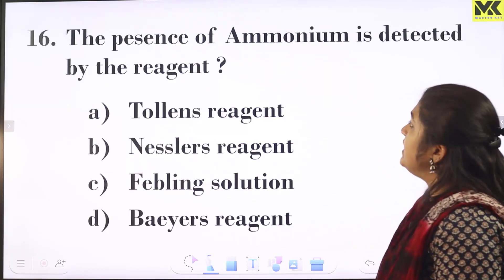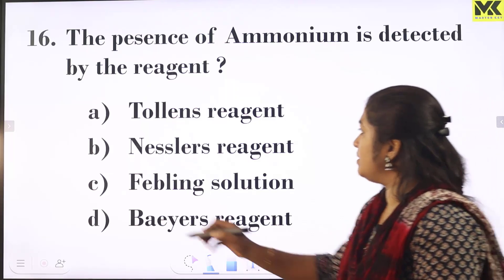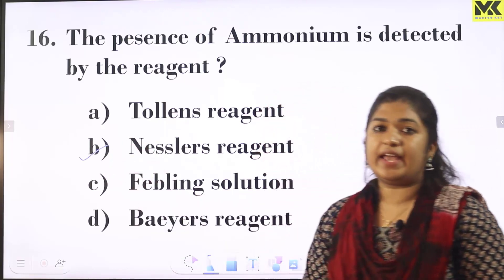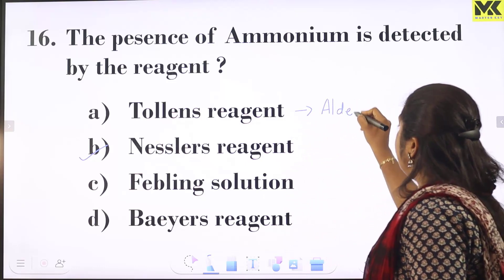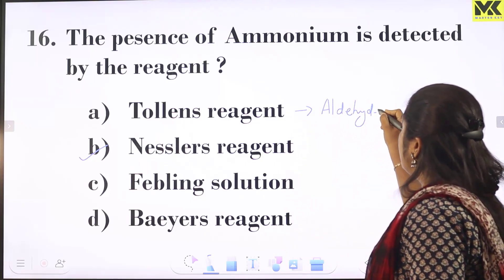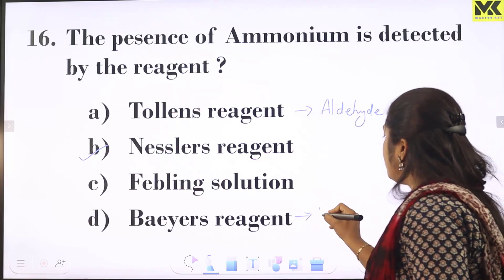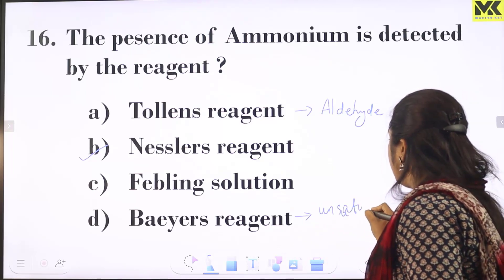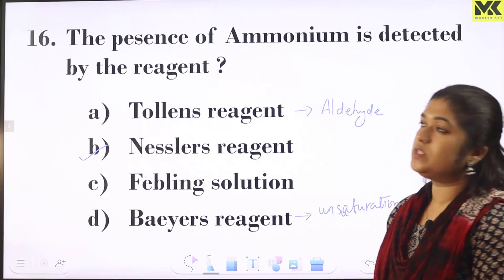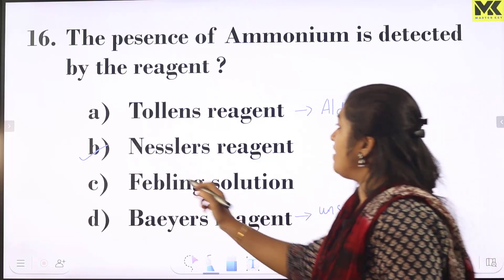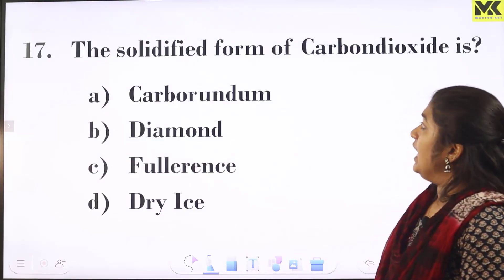The presence of ammonium is detected by Nessler's reagent. Tollens' reagent is used to detect the presence of aldehyde. So for ammonium detection, we use Nessler's reagent.